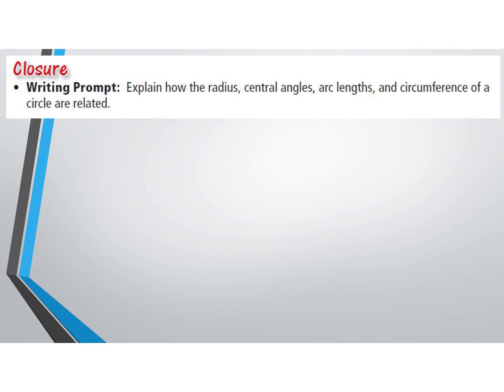You have to answer this last exit ticket. I need you to explain how the radius, central angles, arc lengths, and circumference of a circle are related. It could be as simple as they're all parts of a circle, or as detailed as how you use them to calculate each other.